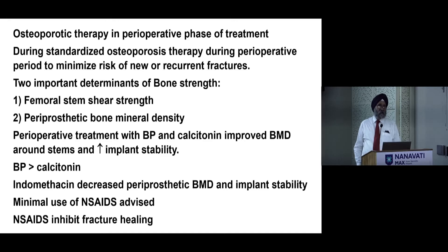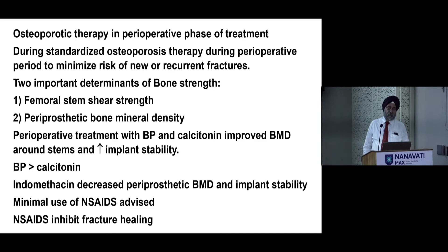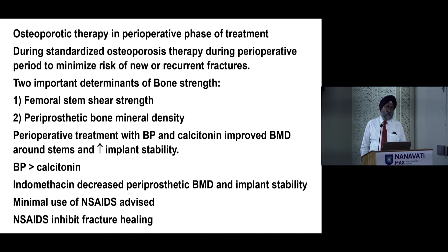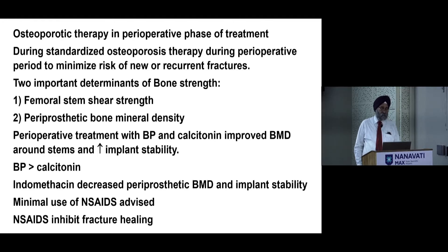For surgeons, the important question is how to use osteoporosis therapy in the perioperative phase to minimize the risk of new or recurrent fractures. Two important determinants of bone strength are femoral stem shear strength and periprosthetic bone mineral density. Perioperative treatment with bisphosphonate and calcitonin improved BMD around stems and increased implant stability; bisphosphonate was better than calcitonin. Indomethacin decreased periprosthetic BMD and implant stability, so using NSAIDs postoperatively for a longer period is harmful to stem stability, as NSAIDs inhibit fracture healing.